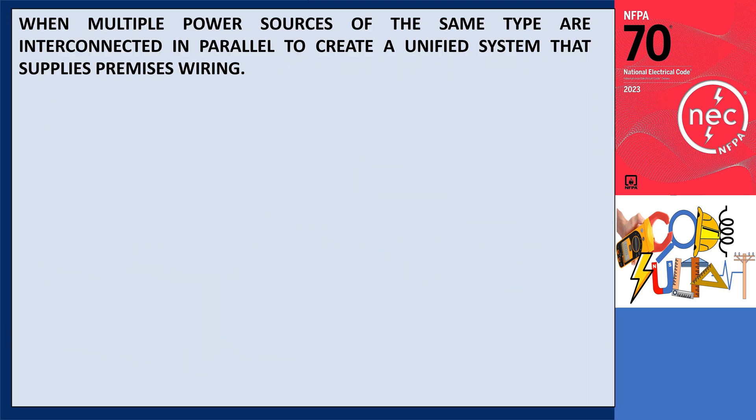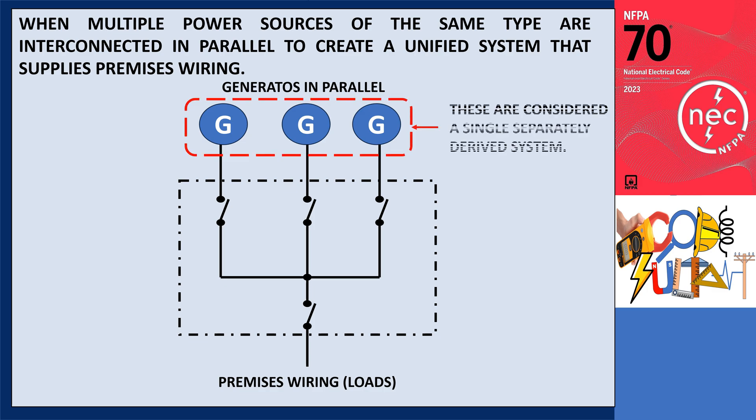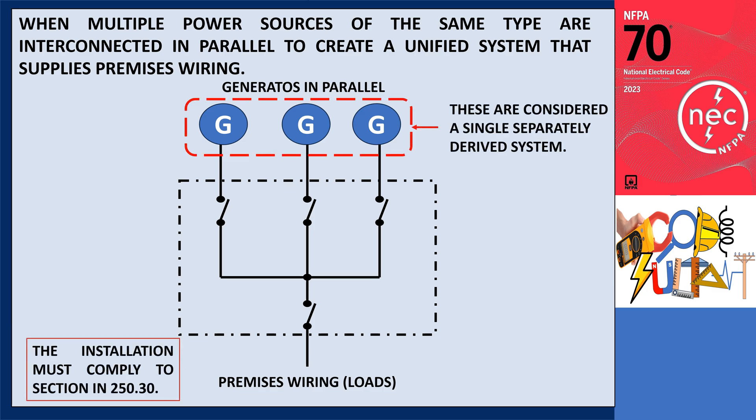Further, when multiple power sources of the same type are interconnected and parallel to create a unified system that supplies premises wiring, they are considered a single separately derived system. The installation of such a system must be carried out by the regulations stated in 250.30.